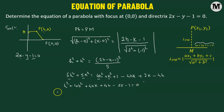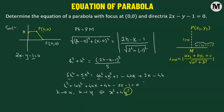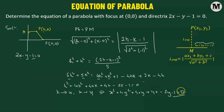As the final step, we replace h with x and k with y. This gives us x squared plus 4y squared plus 4xy plus 4x minus 2y minus 1 equals 0. This is the required equation of the parabola with focus at (0, 0) and directrix 2x minus y minus 1 equals 0.